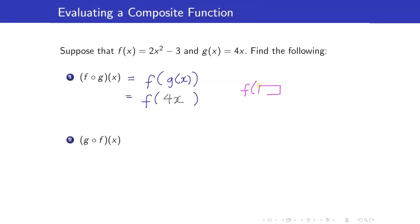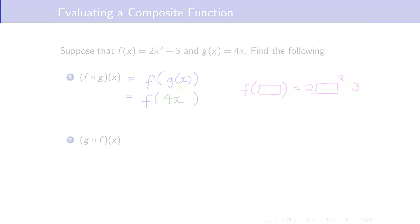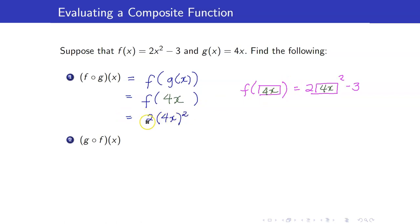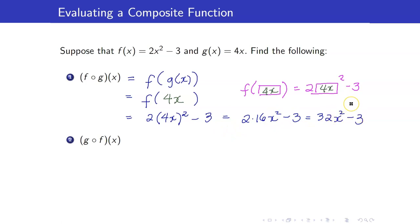Instead of a star, I will be using a box. This is equal to 2 times box squared minus 3. But this time around, we want box to be equal to 4x. So I will put 4x here. Hence, f of 4x is equal to 2 times the entire 4x squared minus 3, which is 2 times 16x squared minus 3, equal to 32x squared minus 3.